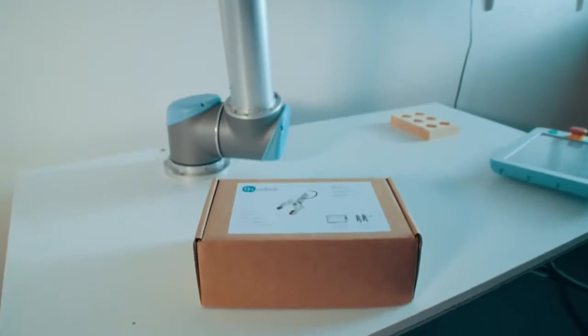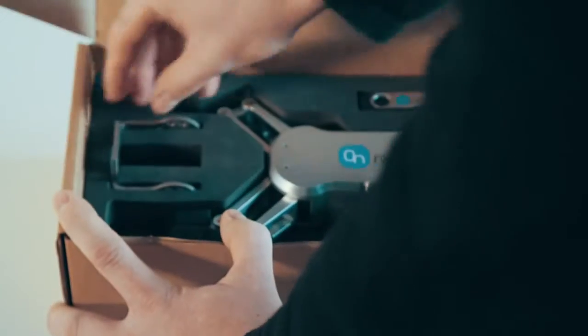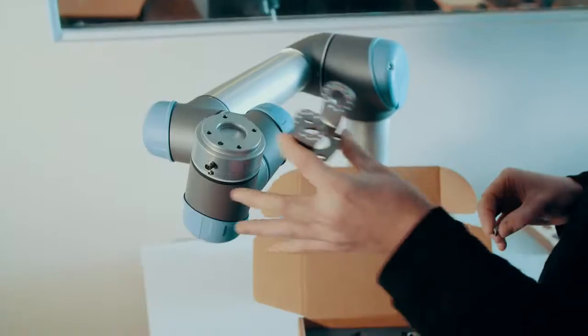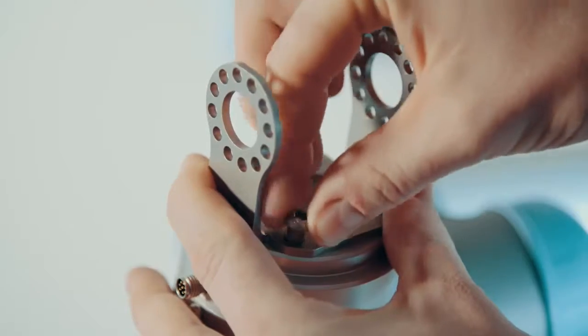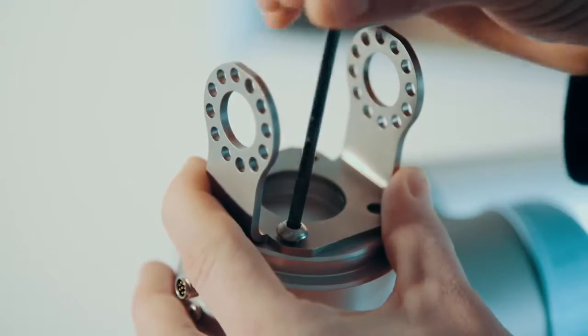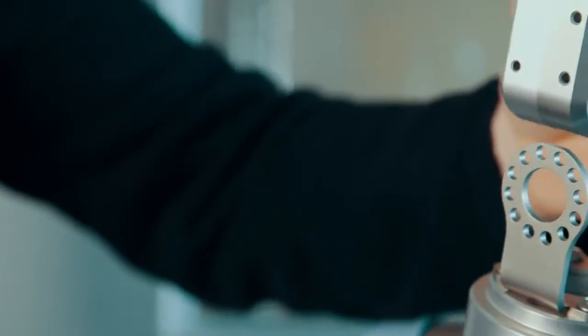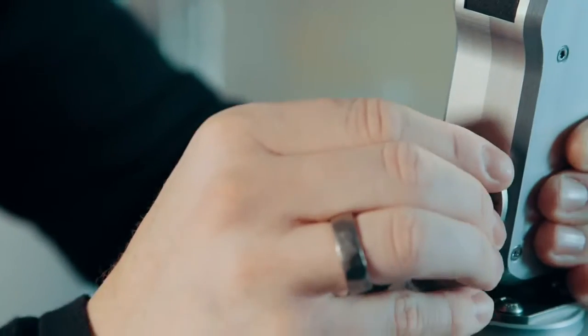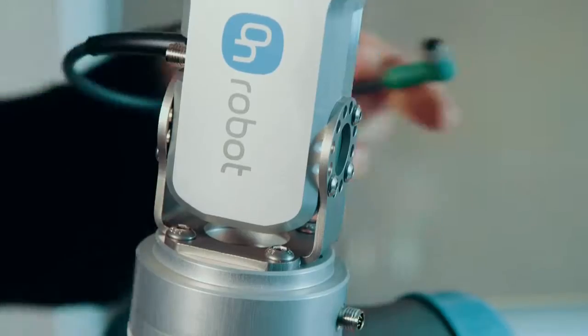At OnRobot we have developed the RG2, the market's most versatile, most user-friendly and safe collaborative gripper. We have eliminated all the traditional complexity and hassle, such as compressed air, signal and power cables, and external installation kits.